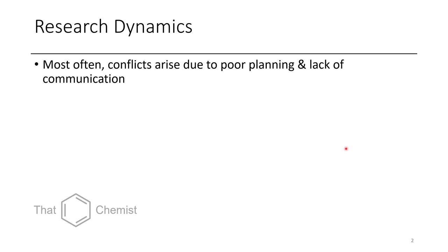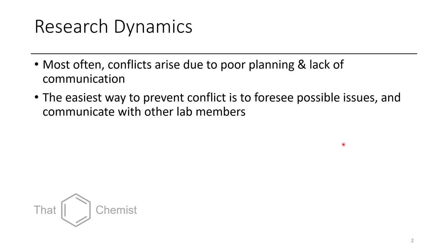When you're working in a research lab, it's quite common to have conflicts arising, and they usually occur due to poor planning or lack of communication. This kind of applies to all areas of life, but today we're mostly focusing on lab conflict. The easiest way to prevent lab conflict is to foresee possible issues and communicate with other people.